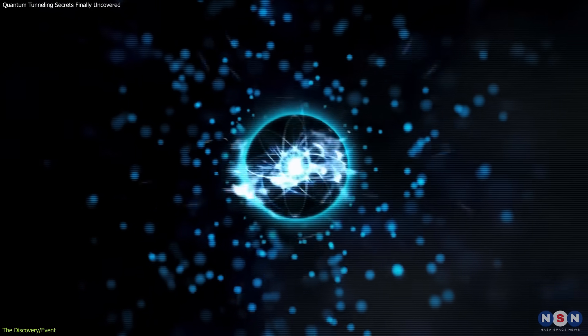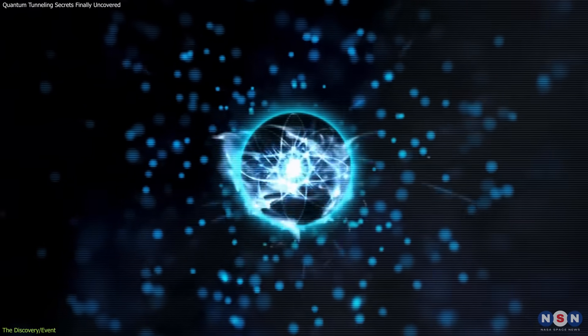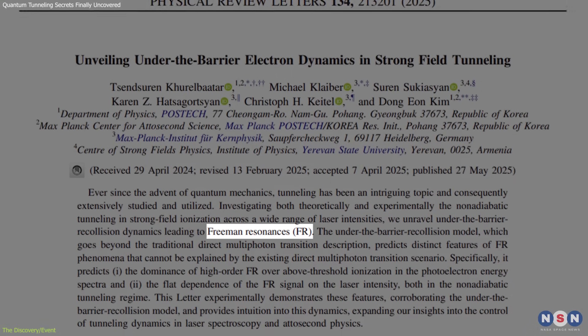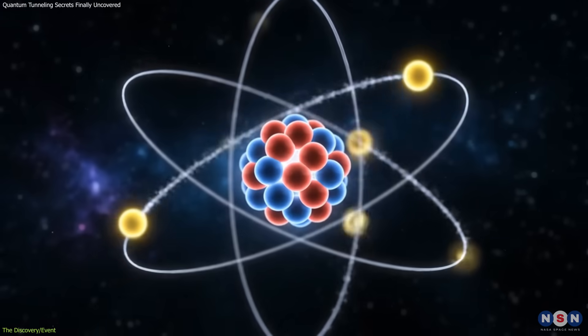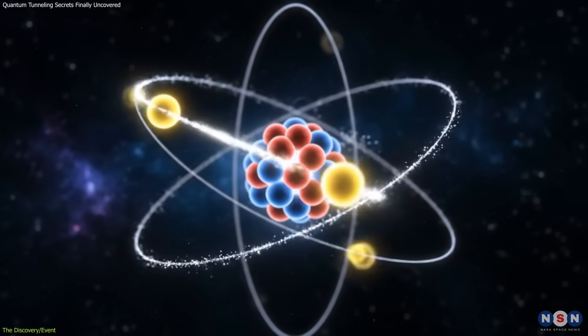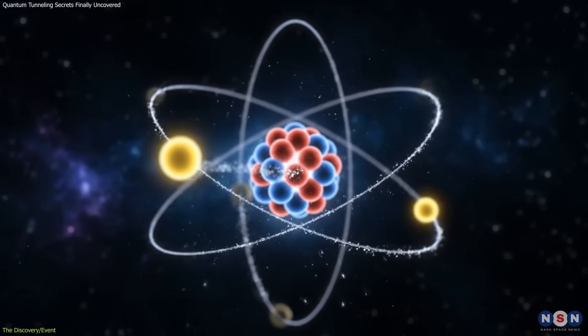The study also found that electrons gain additional energy during this recollision. This boosts a process called Freeman resonance, a type of ionization where electrons become more likely to escape their atomic bonds.